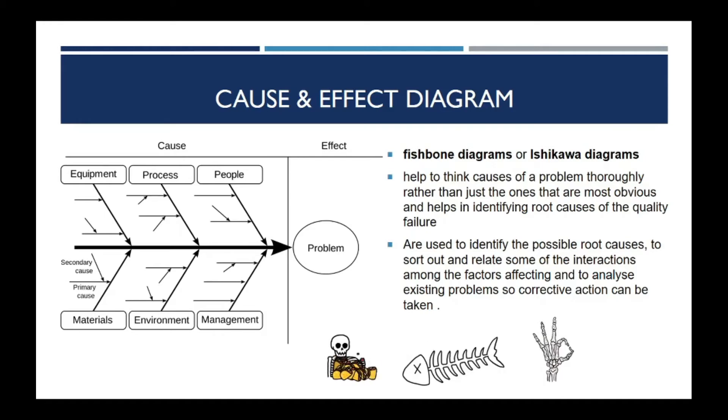Cause and Effect Diagram helps to think about the cause of a problem thoroughly, rather than just the ones that are most obvious, and helps in identifying the root causes of quality failure. Cause and Effect Diagrams are used to identify possible root causes, to sort out and relate some of the interactions among the factors affecting a process, and to analyze existing problems so corrective action can be taken.